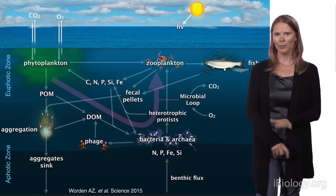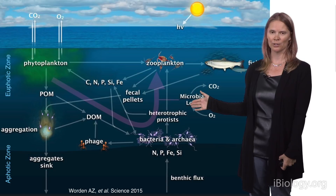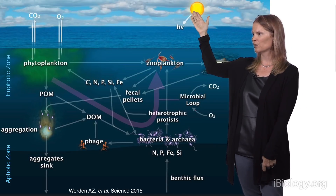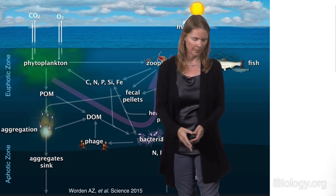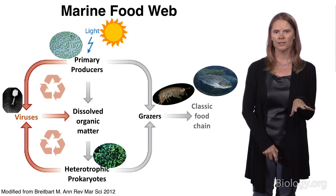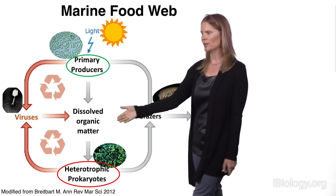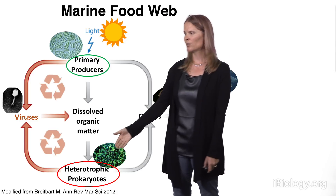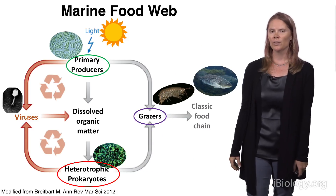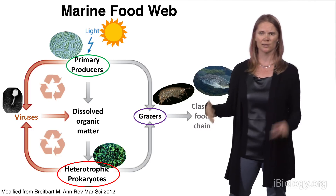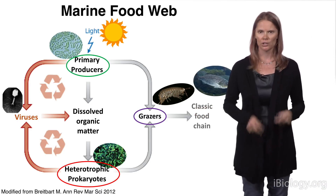Before I get into the deep ocean, I want to make sure you understand how microbes operate in the surface ocean. There are microbes in the surface ocean using sunlight to fix carbon and produce oxygen, moving carbon into the microbial food web and higher life forms. The key players are photosynthetic primary producers whose carbon — dissolved organic matter — feeds heterotrophic microbes, then secondary consumers like grazers such as copepods or zooplankton, and on up to higher life forms like fish and crabs.